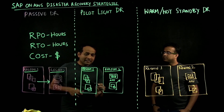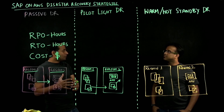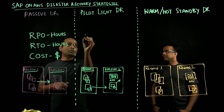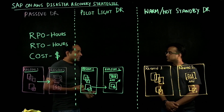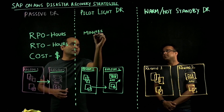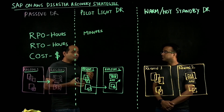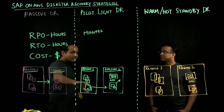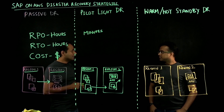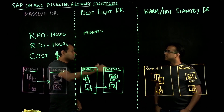Region 2 will have a compute instance for the critical application component you have identified — in this case, your database has a lightweight instance running in the second region. You are replicating the changes in the primary instance to the secondary database constantly, which will help reduce your recovery point objective from hours to minutes. This is achieved using the database native replication method. When it comes to the app layer, depending on your objective, you can use Amazon Machine Images or services like Elastic Disaster Recovery to constantly replicate data from your app layer to the second region.